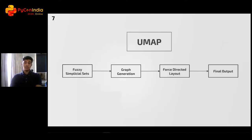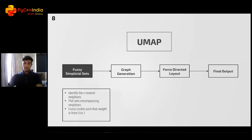In general, we can define UMAP as a four-step process. These are a broad overview of the full UMAP algorithm, and each step has a complex mathematical background. But we don't need to delve into the nitty-gritty details to understand what the algorithm does. The first step in the process is the plotting of fuzzy simplicial sets. This term seems too mathematical, but it is quite straightforward. What we do is plot sets around each point such that it encompasses a fixed number of points. For simplicity, let's assume these to be circles.